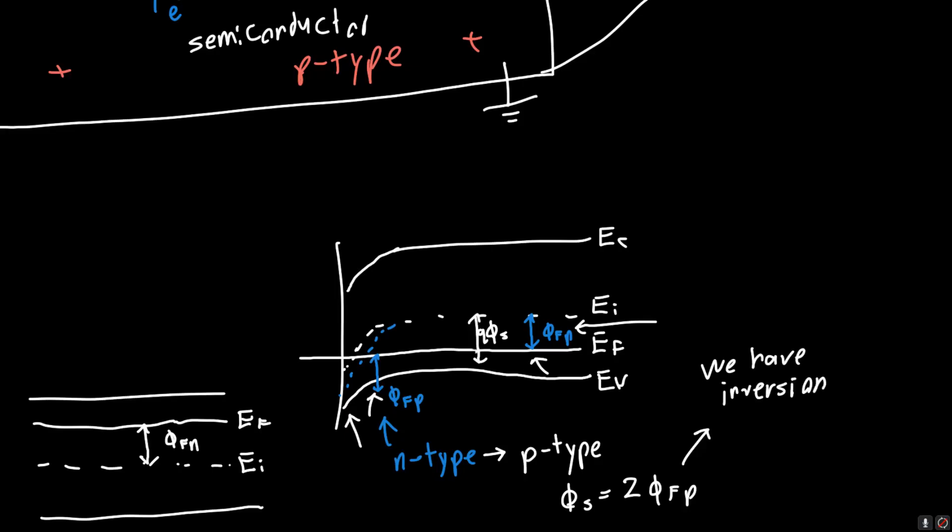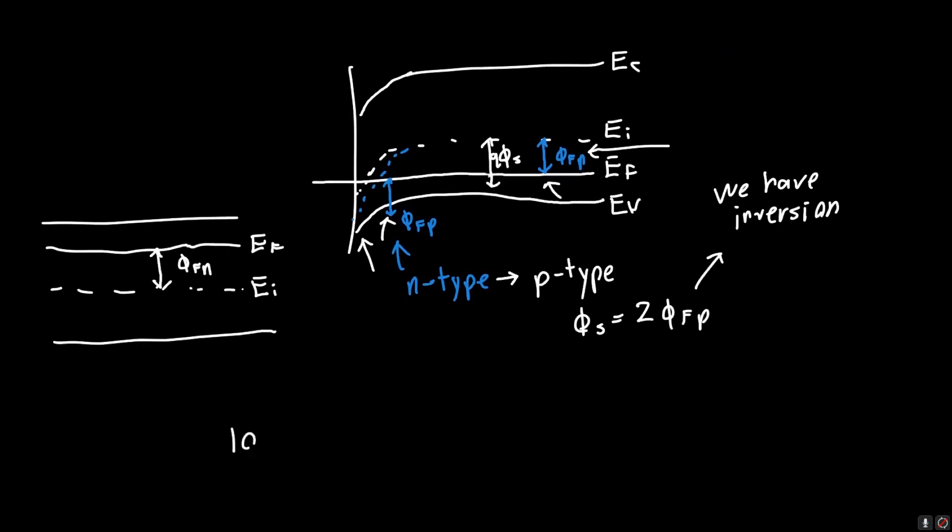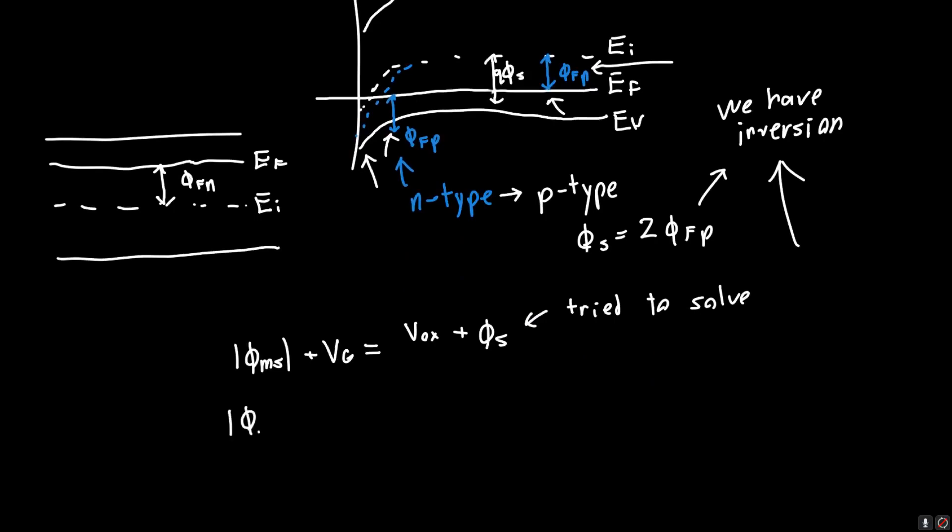And so how does this dovetail with what we did previously? Well, remember, we said that the total amount of band bending, in the previous videos, was just equal to the voltage drop across the oxide plus PHI_S. And we spent a good portion of time trying to solve for PHI_S, so we tried to solve for this, and we showed that this can just be reduced to a quadratic equation if you want to know what it is, but we're saying that if we have inversion, we know what PHI_S is, so we can just rewrite this equation. VG is equal to Vox plus 2 times PHI_FP.